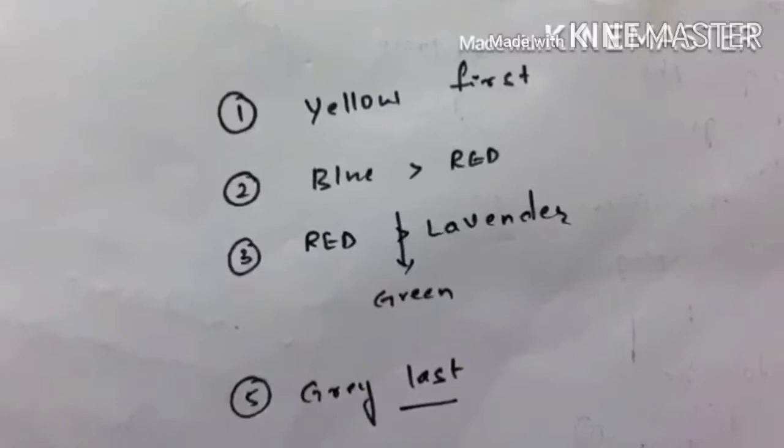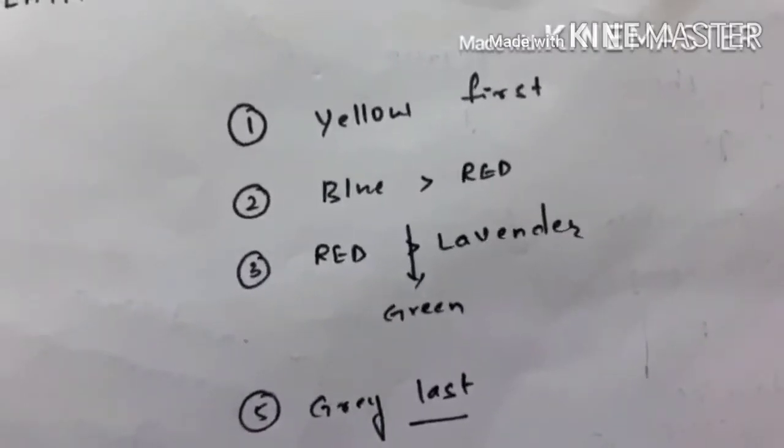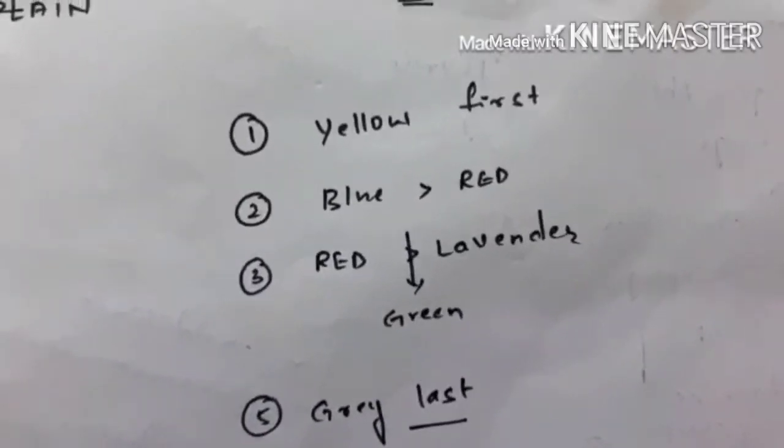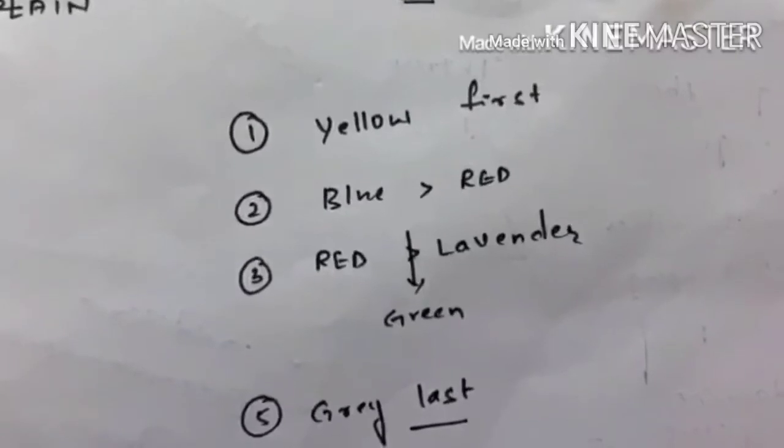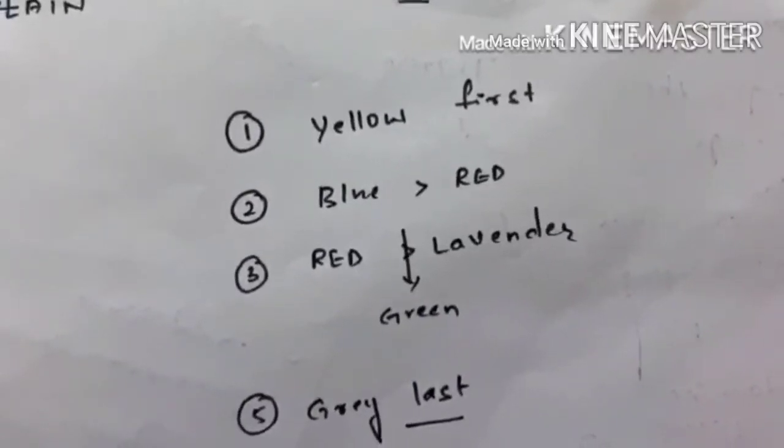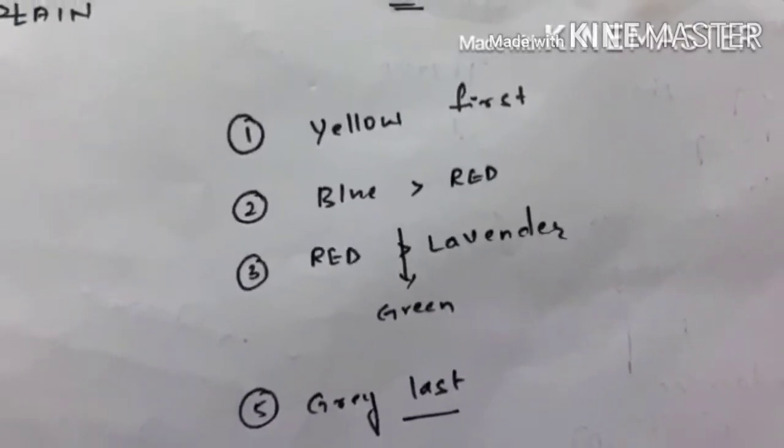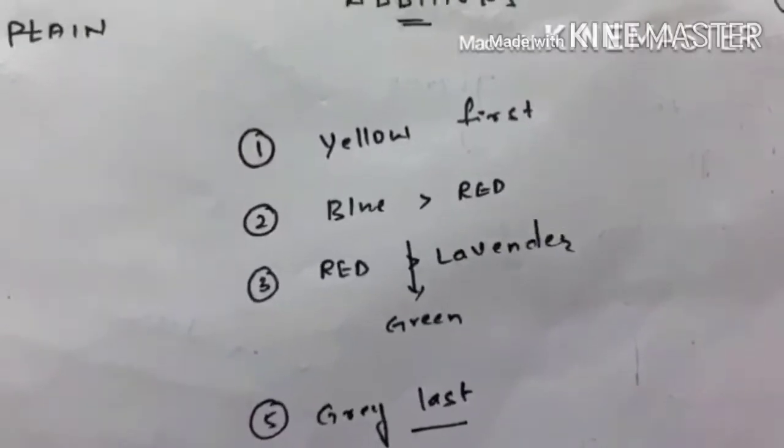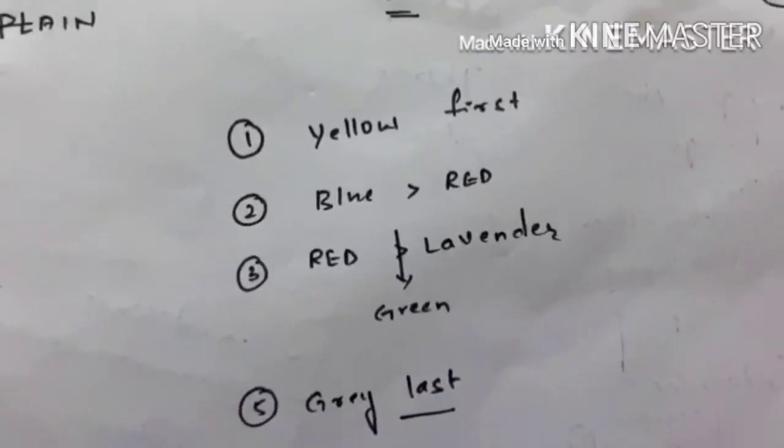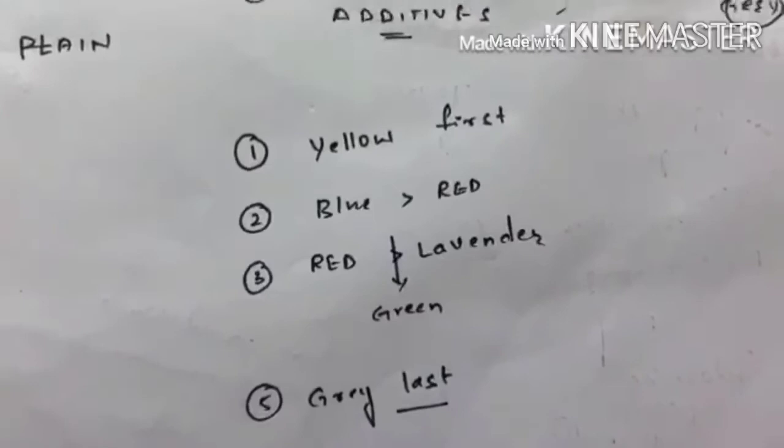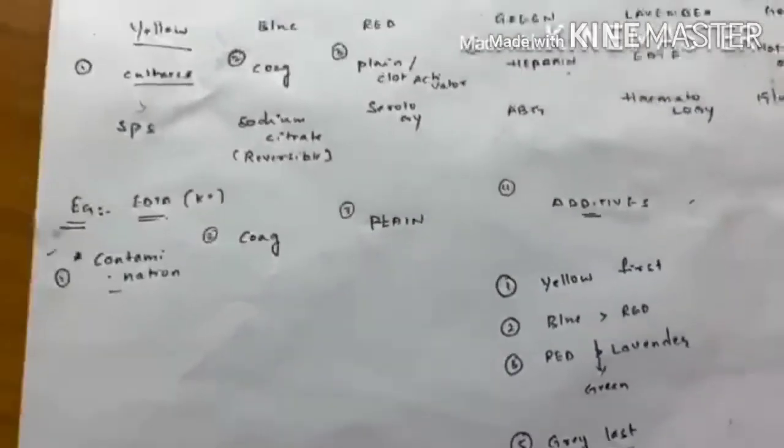We already know red first then lavender. So yellow, blue, red. Only thing we need to remember is green in between red and lavender. Grey last. Yellow first, grey last. Blue, red, green and lavender. Hope you liked the video. Thank you.